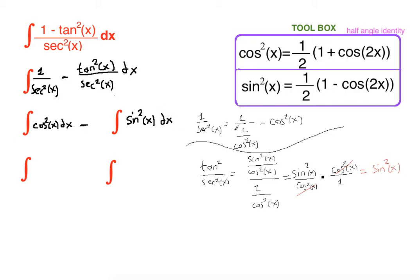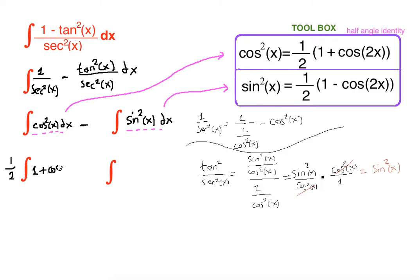Now we are going to apply the half-angle identity for cosine squared of x and sine squared of x. The half-angle identity for cosine squared of x is one-half times (1 plus cosine of 2x). We pull the constant to the front: one-half times (1 plus cosine of 2x) dx, minus one-half times (1 minus cosine of 2x) dx.